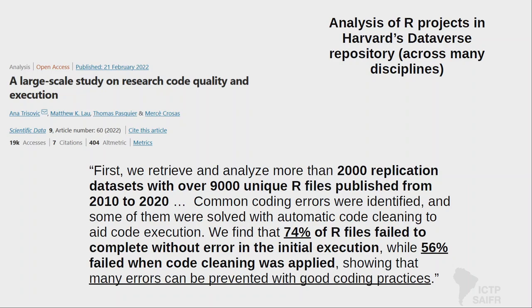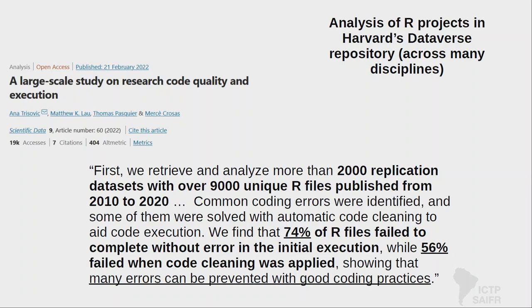Another study focused specifically on ecology. They analyzed the literature, found around 350 studies, and asked: can we run the code? Between 2015 and 2019, only 27% of the articles reviewed were accompanied by code. And even fewer of those with code were actually reproducible processes.